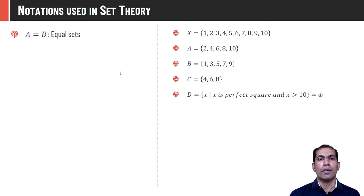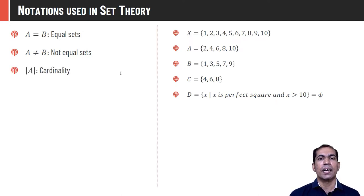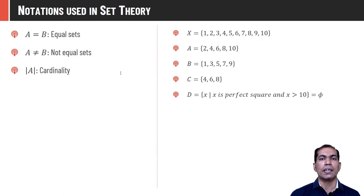A set can never be a proper subset or proper superset of itself, but it is always a subset and superset of itself. If all elements in A and B are identical, A and B are equal sets. A ≠ B means elements in A and B are different — some may be common but not all. |A| represents cardinality — the number of elements in a set. Cardinality of A is 5 (five elements), cardinality of C is 3, cardinality of D is 0.